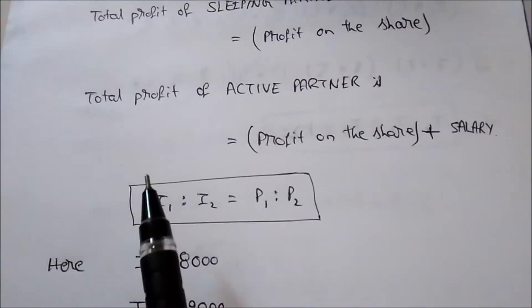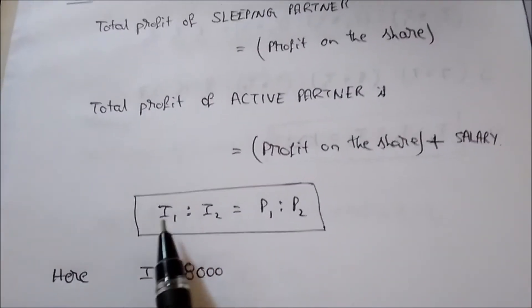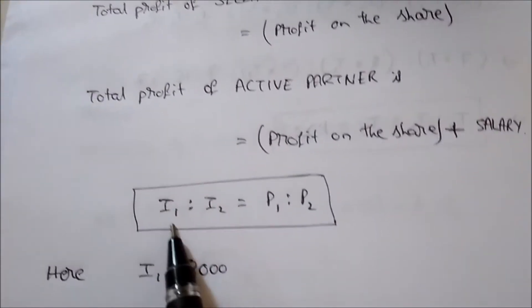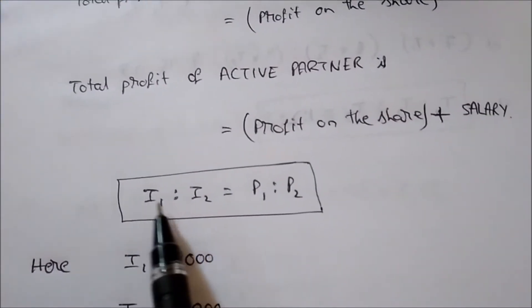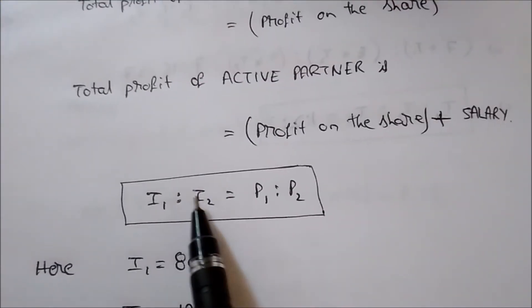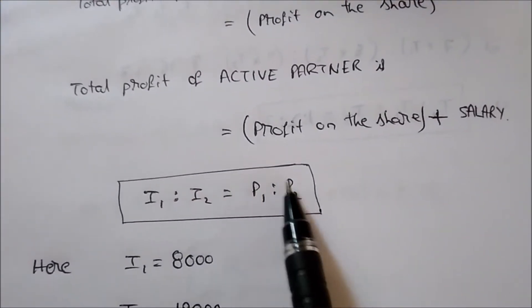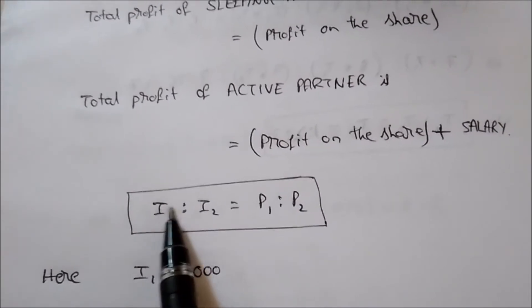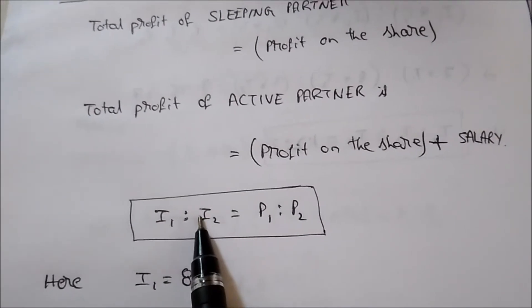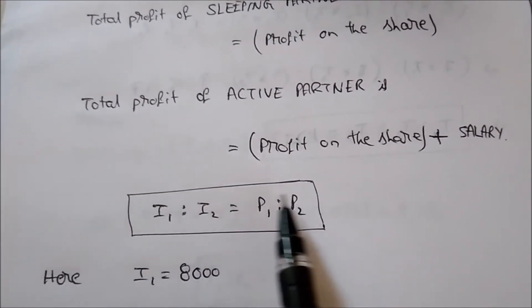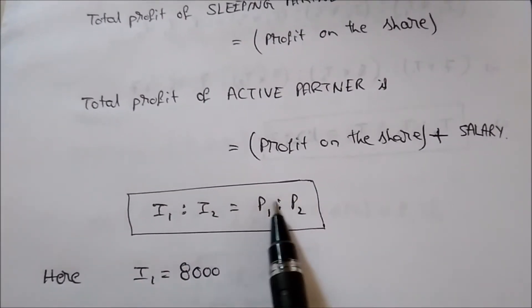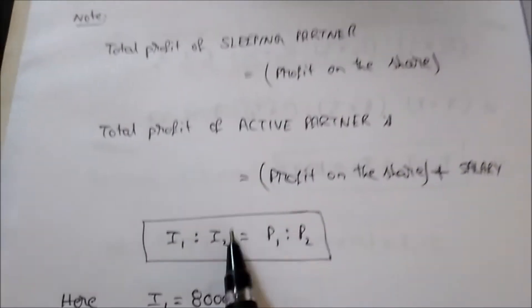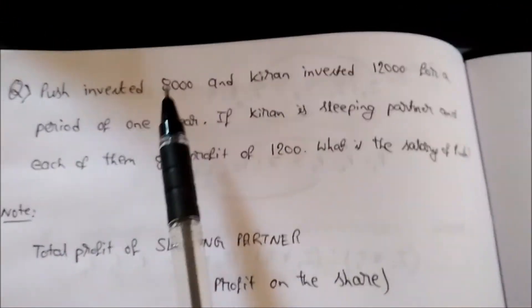There is one formula in partnership. When the time period is common, use this formula: i1 is to i2 equals p1 is to p2 — that is, the ratio of investments is equal to the ratio of profits.